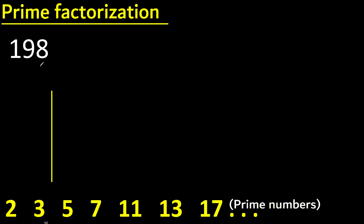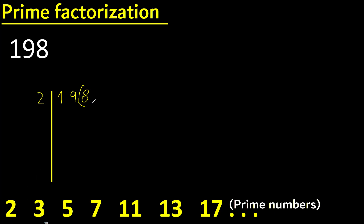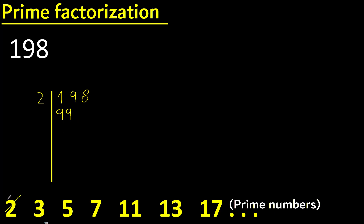Prime factorization of 198. 198 can be divided by 2 because the last digit is even. 198 divided by 2 is 99. 99 cannot be divided by 2 because the last digit is not even. It can be divided by 3.